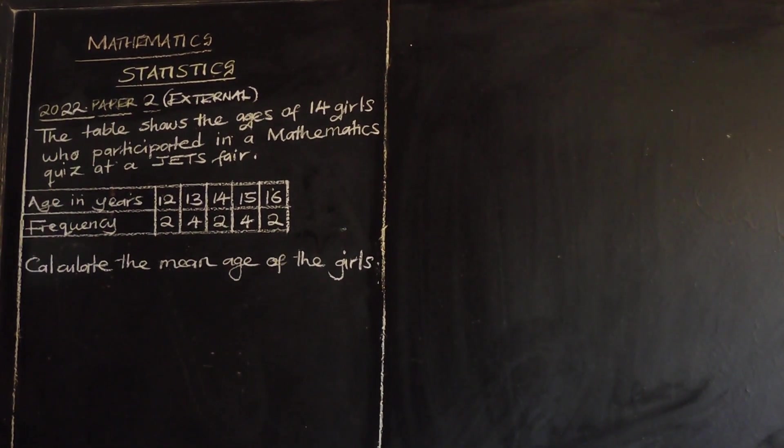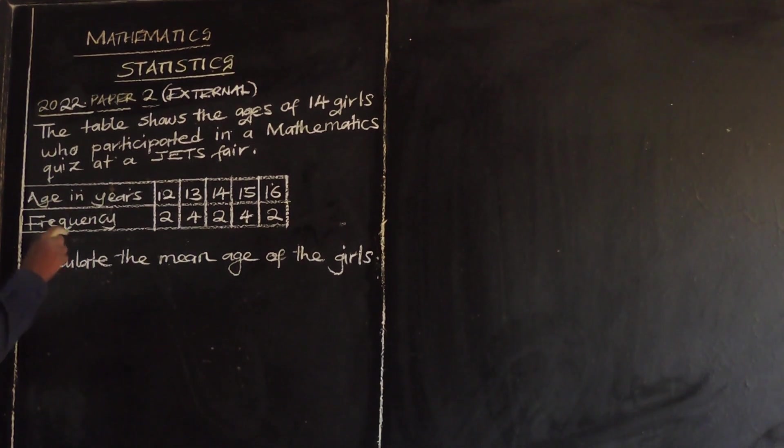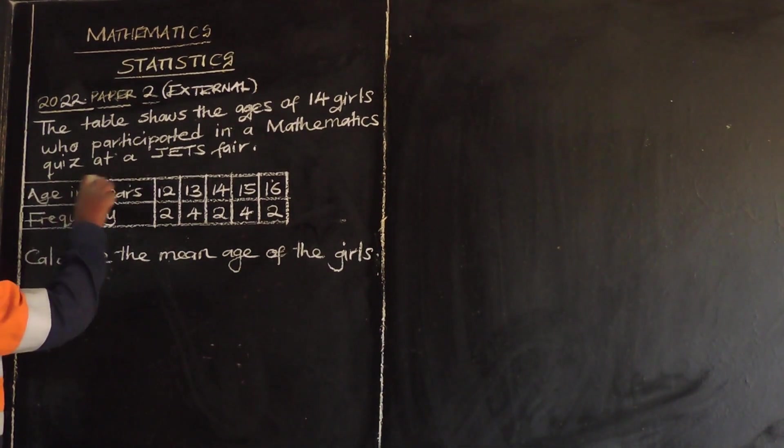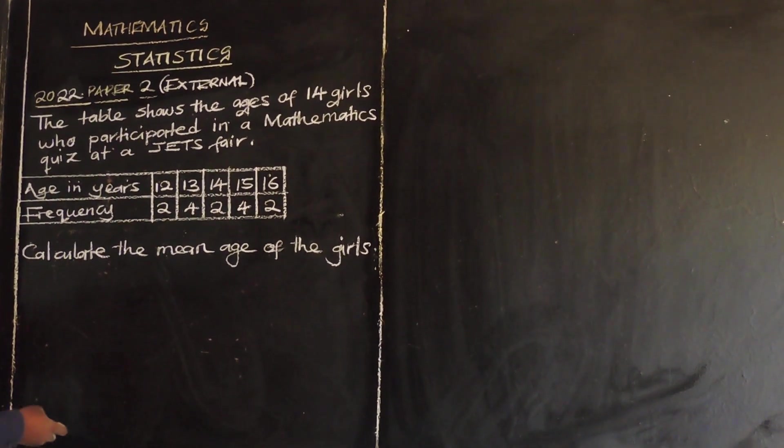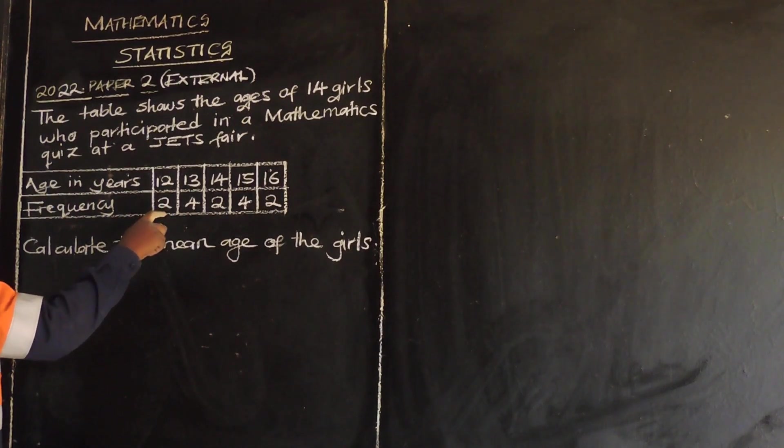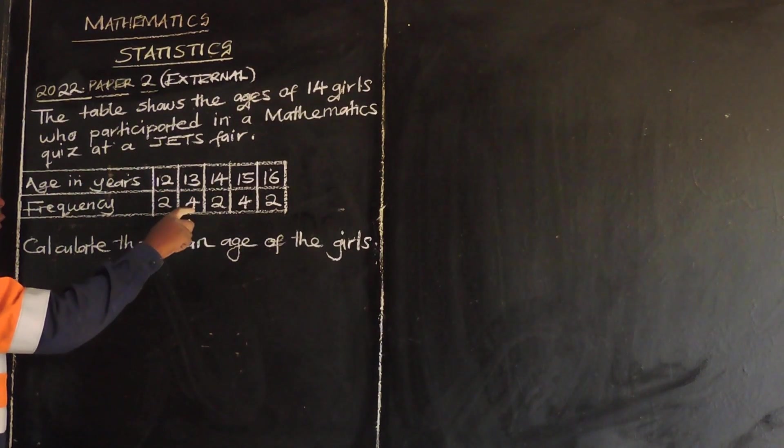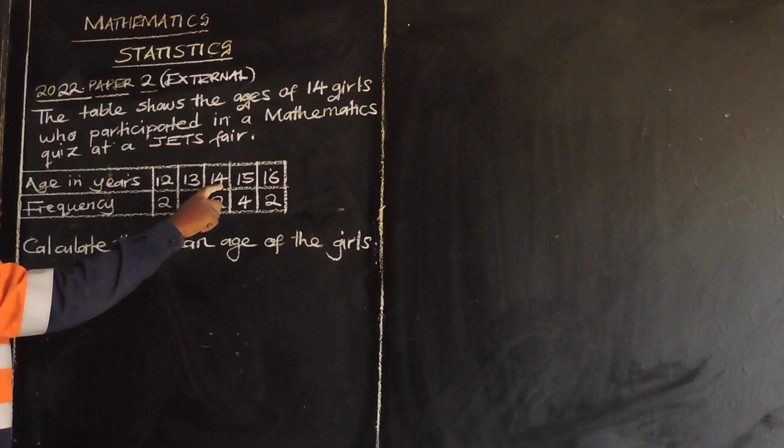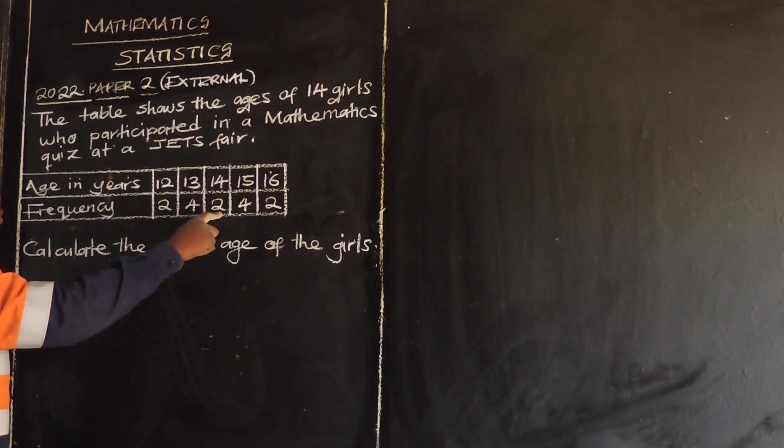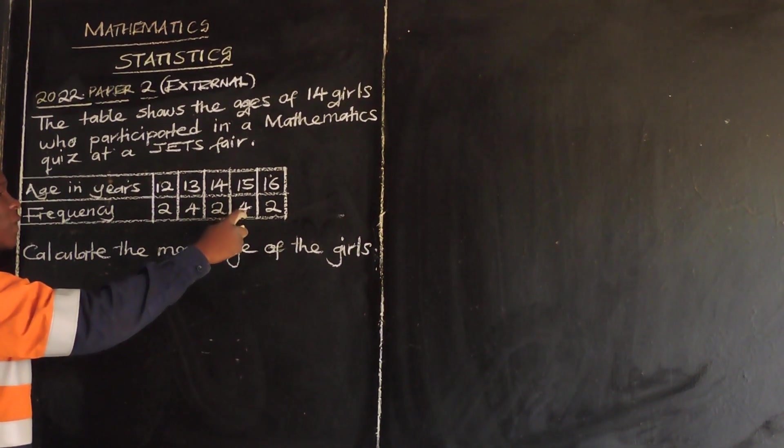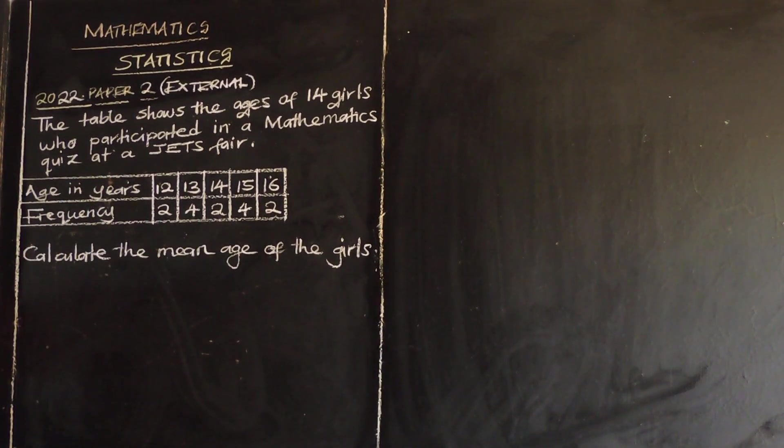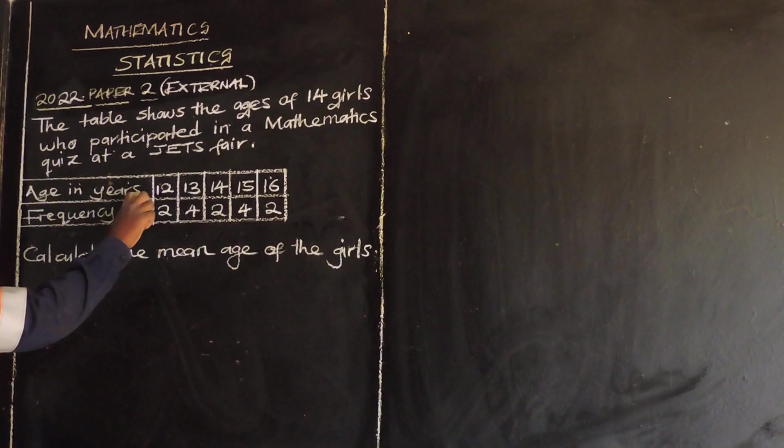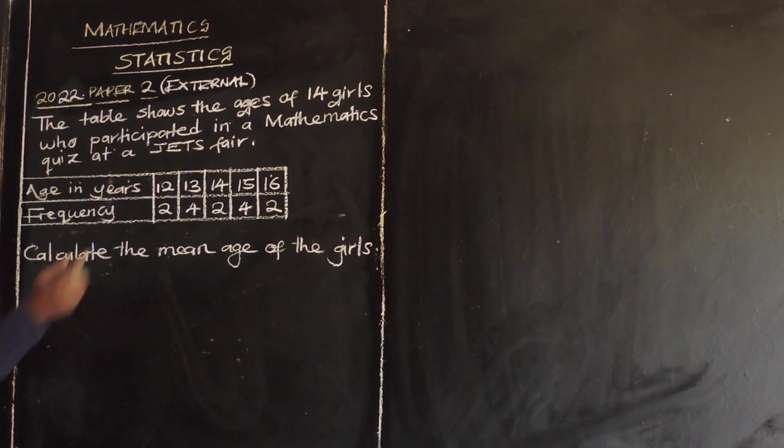So now, this table it has two rows. The first row, it is showing the age in years. The age in years. So those who were 12 years, they were 2. Then those who were 13, they were 4. Those who were 14 years, they were 2. And those who were 15, they were 4. And finally, who were 16, they were 2. That's the interpretation. This frequency represents the number of girls.